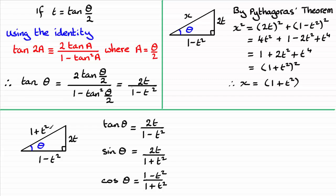So can you see now that sine theta is the opposite over the hypotenuse? So that's going to be 2t over 1 plus t squared. And cosine theta is adjacent over hypotenuse. That's 1 minus t squared over 1 plus t squared.